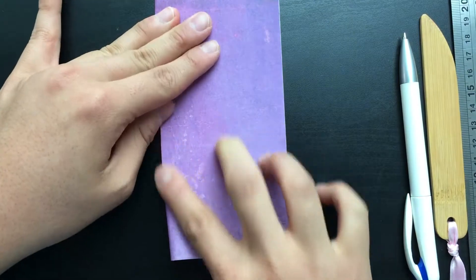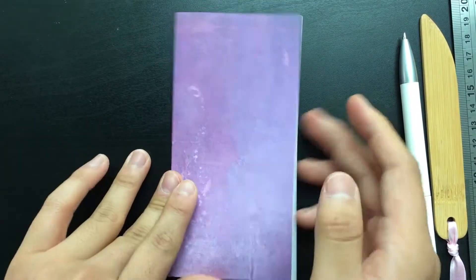First you want to fold the paper in half vertically like so, and then unfold.